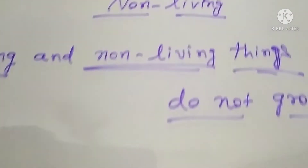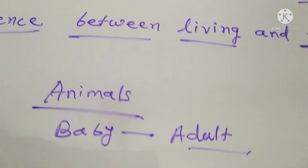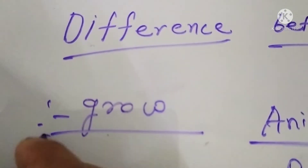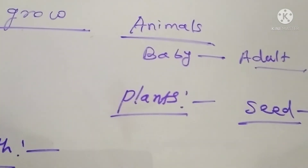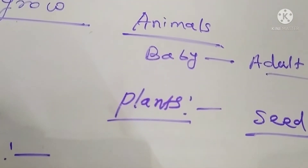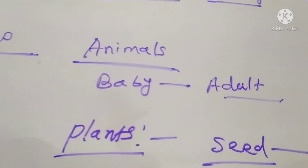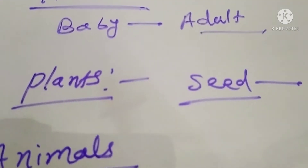Is it clear? Living things have growth; non-living things do not have growth. Second difference: living things breathe. Plants, animals, and human beings all breathe. Plants breathe with the help of tiny small pores known as stomata.